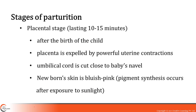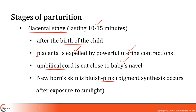The last stage of parturition is the placental stage, lasting 10 to 15 minutes. After the child has come out, the placenta is expelled by powerful contractions of the uterus. The placenta along with the umbilical cord is called the afterbirth. The umbilical cord is cut very close to the baby's navel. A newborn baby's skin is bluish pink rather than brown, because it takes a while for melanin pigments to be synthesized following exposure to sunlight.